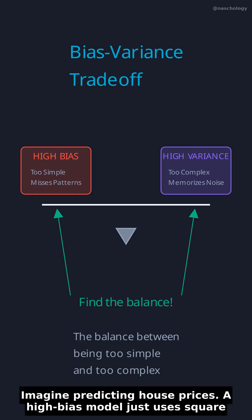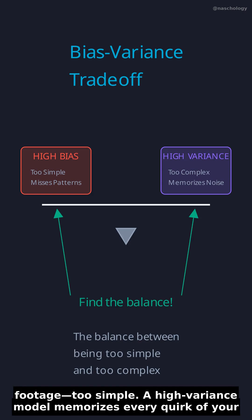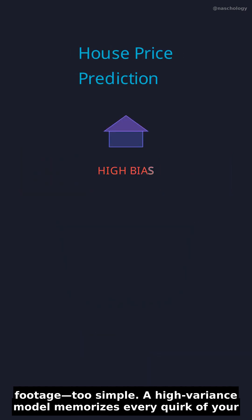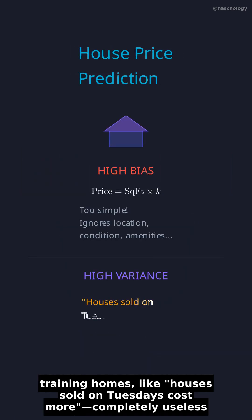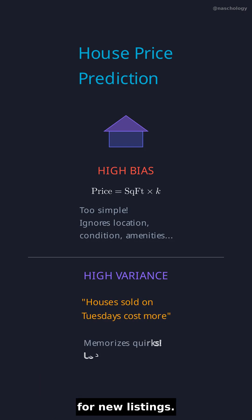Imagine predicting house prices. A high bias model just uses square footage — too simple. A high variance model memorizes every quirk of your training homes, like houses sold on Tuesdays cost more, completely useless for new listings.